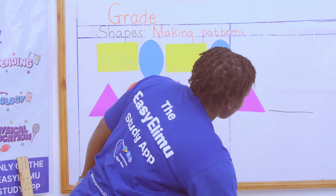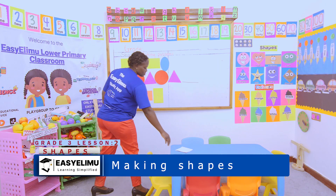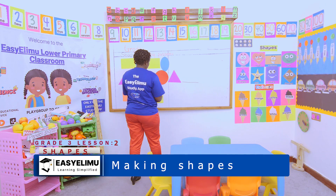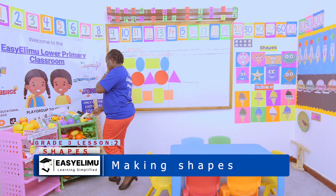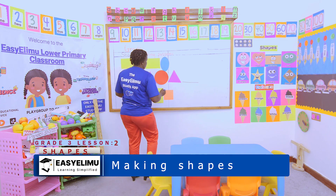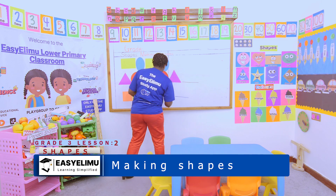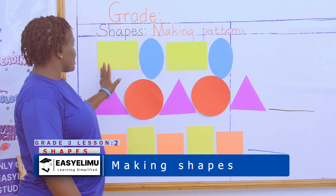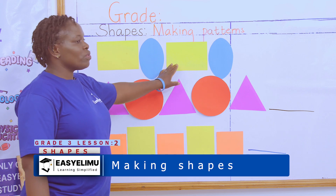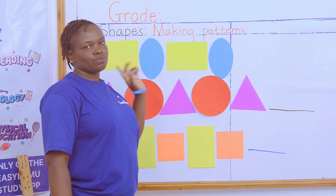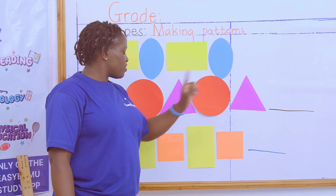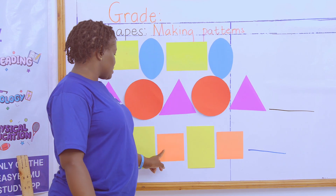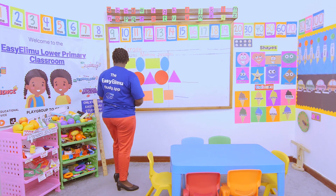And now I have my shape. If I put a square, you will have to complete the pattern because the pattern is not complete. If the rectangles are two, the ovals are supposed to be two. If the triangles are three, the circles are also supposed to be three. If the squares are three, the rectangles are also supposed to be three.